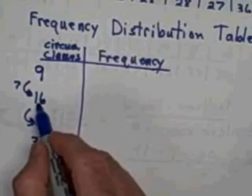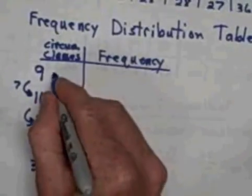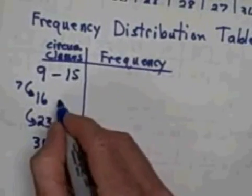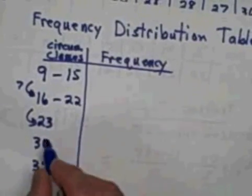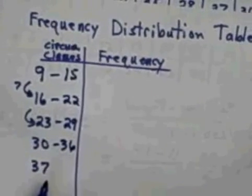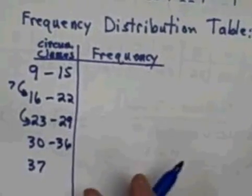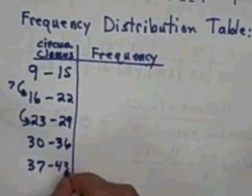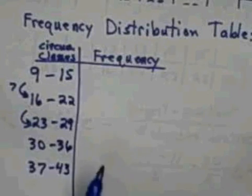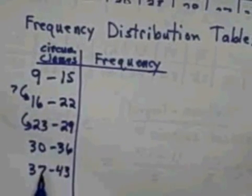So that means if 16 is the beginning of my second class, then my first one ends at 15. My third one starts at 23, so this ends at 22. In the same way, this ends at 29. The fourth class ends at 36. And this one goes all the way up to 43. And notice this does encompass my very smallest value of 11 and my biggest value of 41.